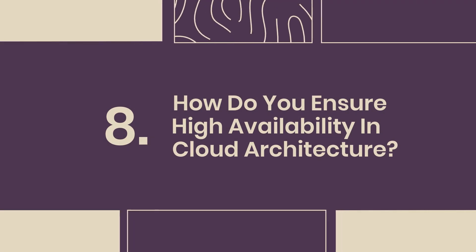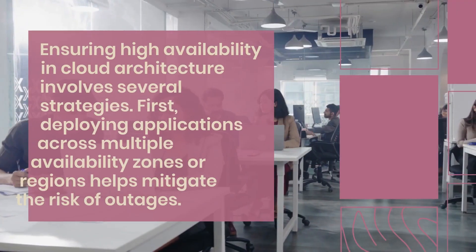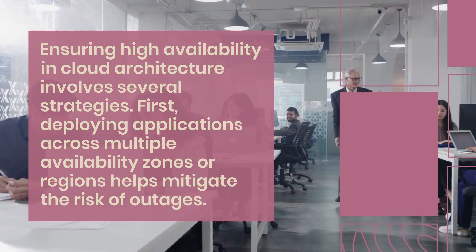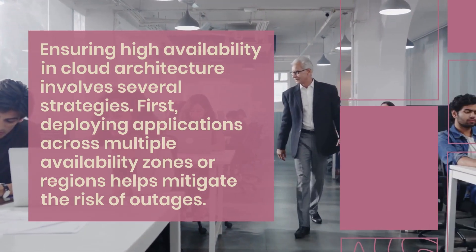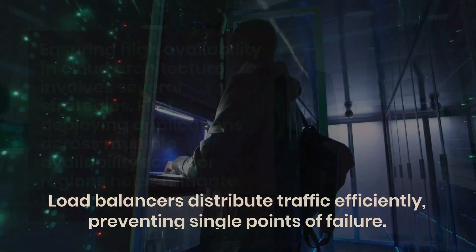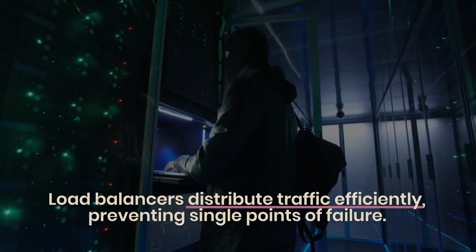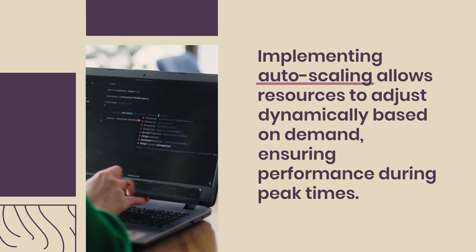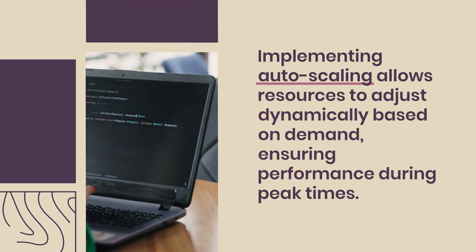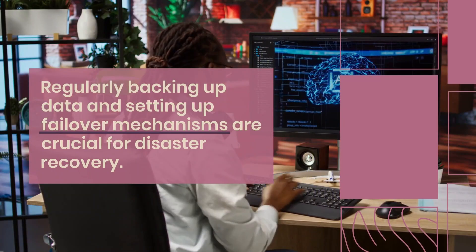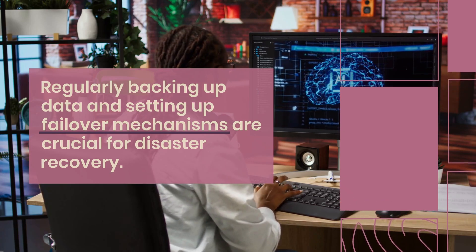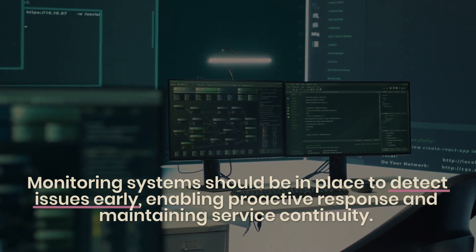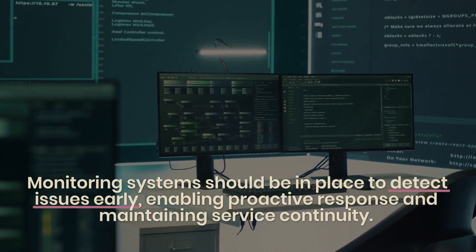8. How do you ensure high availability in cloud architecture? Ensuring high availability involves several strategies. First, deploying applications across multiple availability zones or regions helps mitigate the risk of outages. Load balancers distribute traffic efficiently, preventing single points of failure. Implementing auto-scaling allows resources to adjust dynamically based on demand, ensuring performance during peak times. Regularly backing up data and setting up failover mechanisms are crucial for disaster recovery. Monitoring systems should be in place to detect issues early, enabling proactive response and maintaining service continuity.